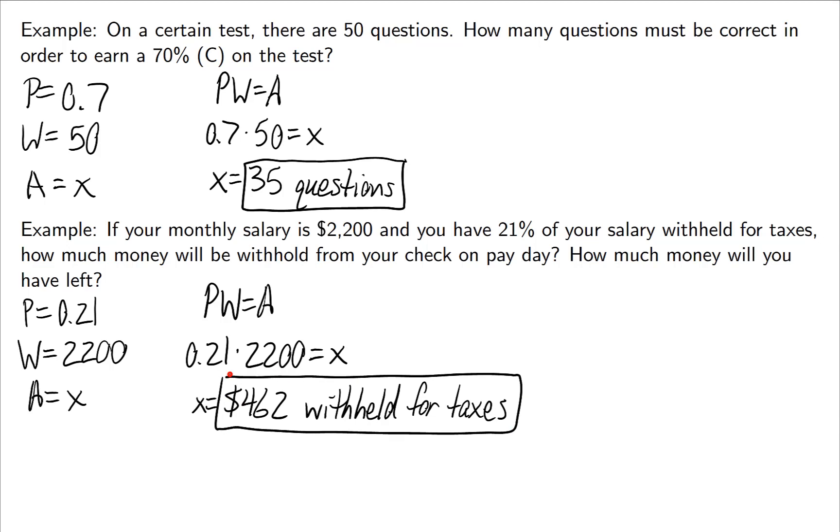Now there's two questions. The second question is how much money will you have left? Your money left would be your 2200 that you started with minus the $462 you're paying for taxes and you end up with $1,738 remaining on your paycheck after you pay taxes.